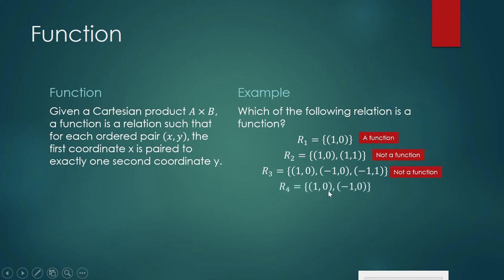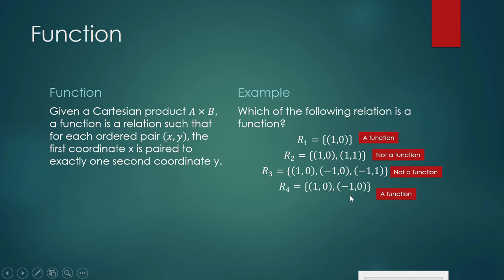How about the relation {(1,0), (-1,0)}? If your answer is it is not a function, that is because you are looking at the y-coordinate being paired to two different x-coordinates. But this one is actually a function, because our definition says it is the first coordinate that must be paired to exactly one second coordinate. Here, 1 is paired to only one y-coordinate, zero, and -1 is also paired to only one y-coordinate, zero. This is a function. Our definition is defined from the point of view of the first coordinate, not the second coordinate.